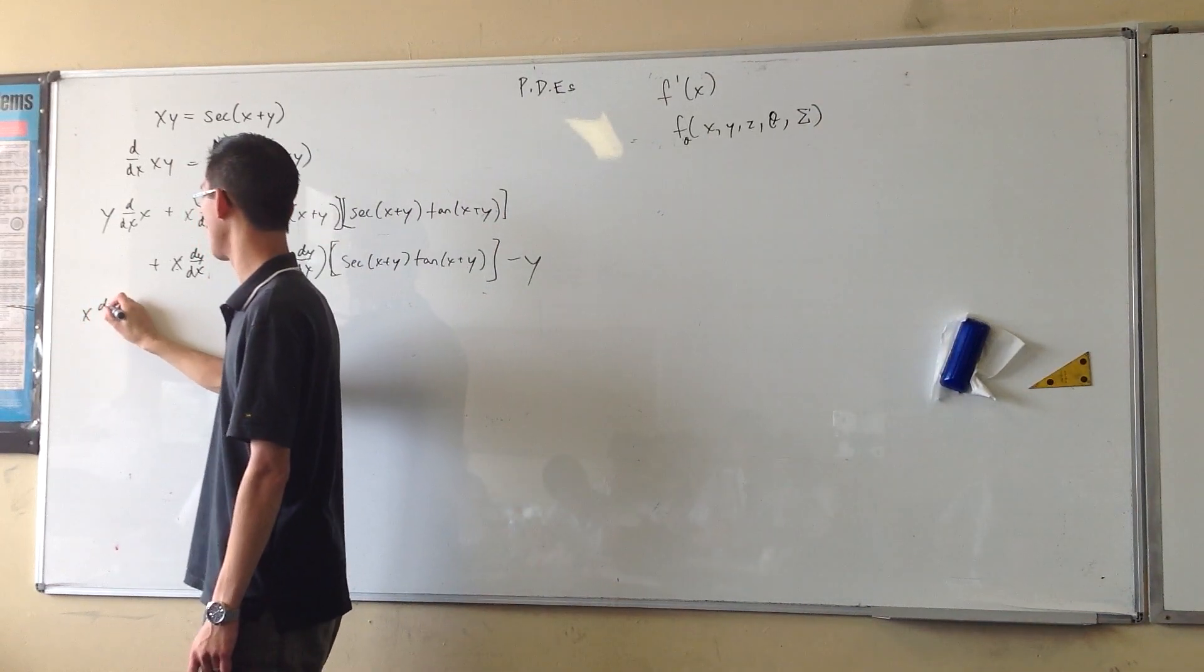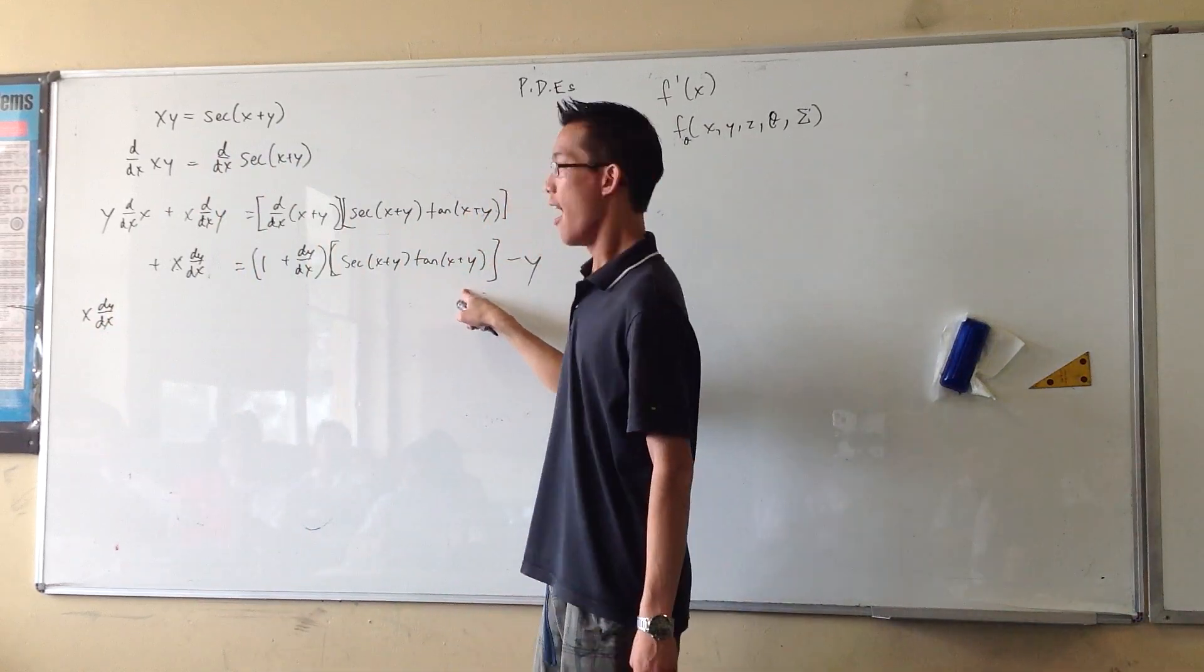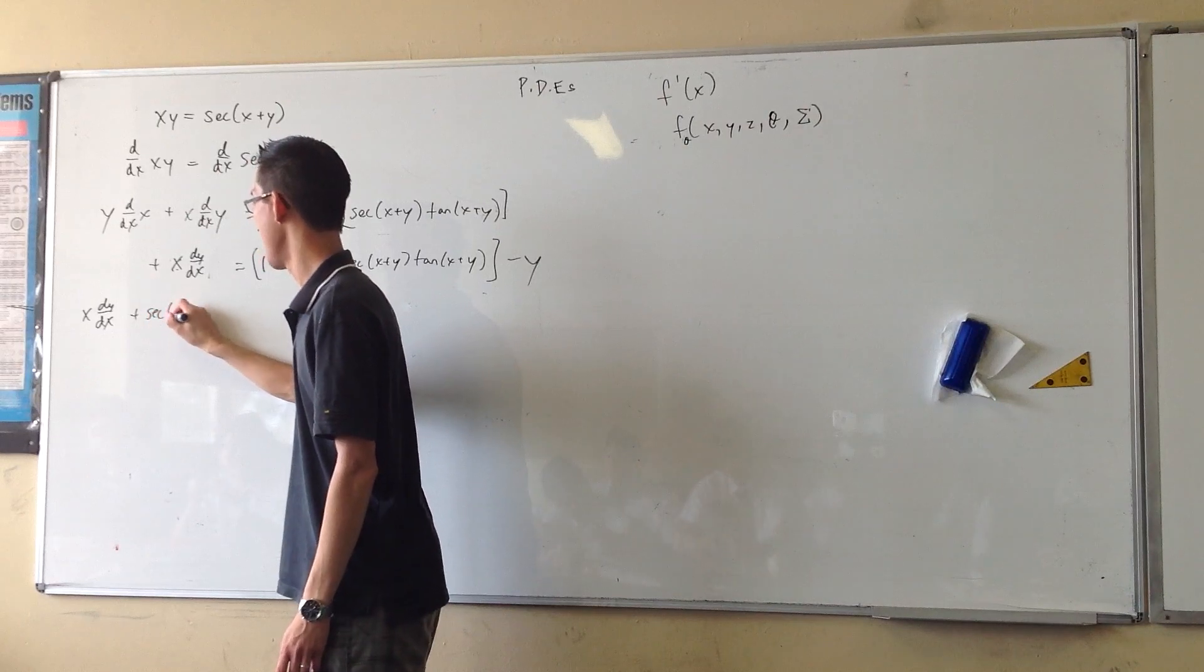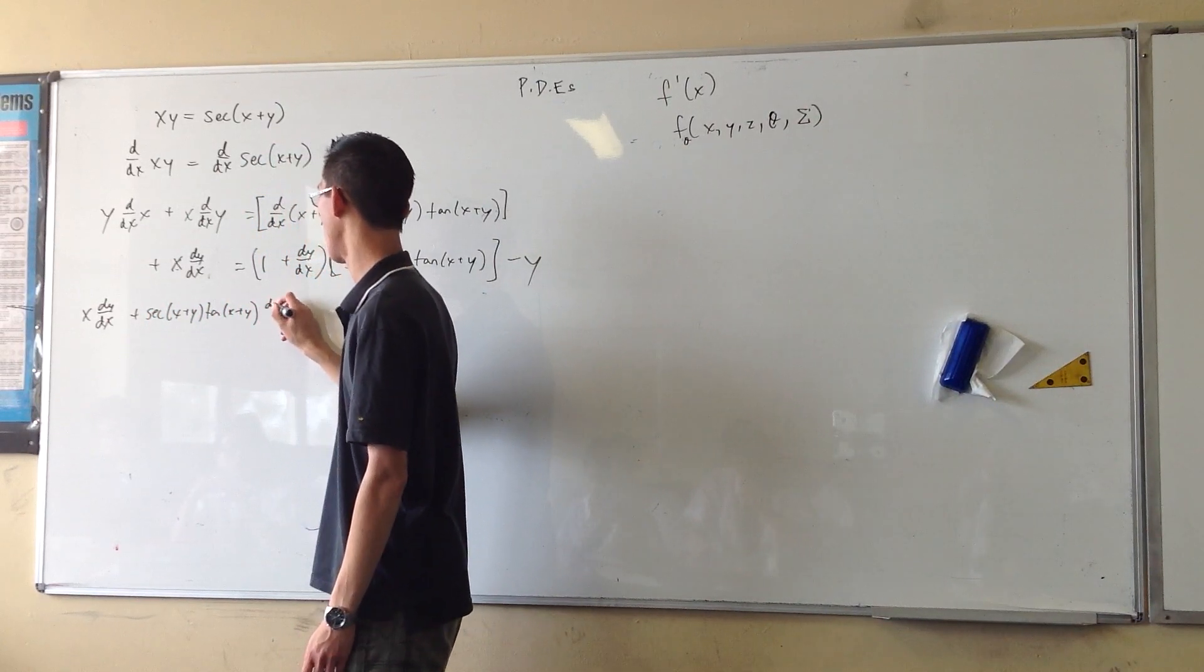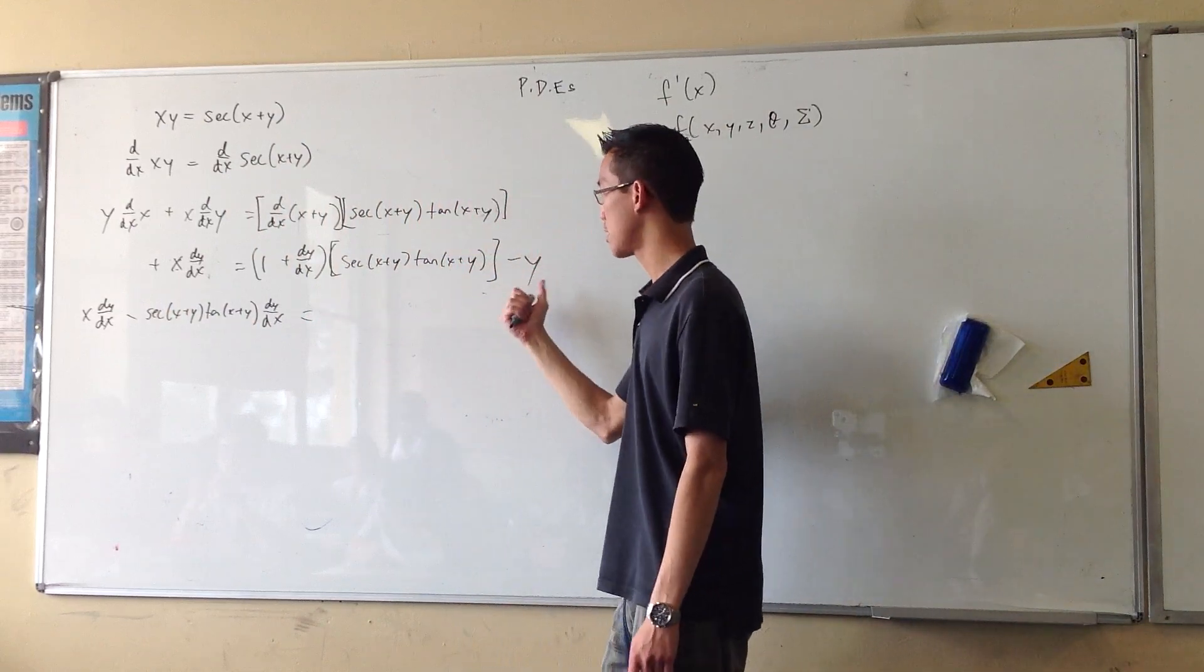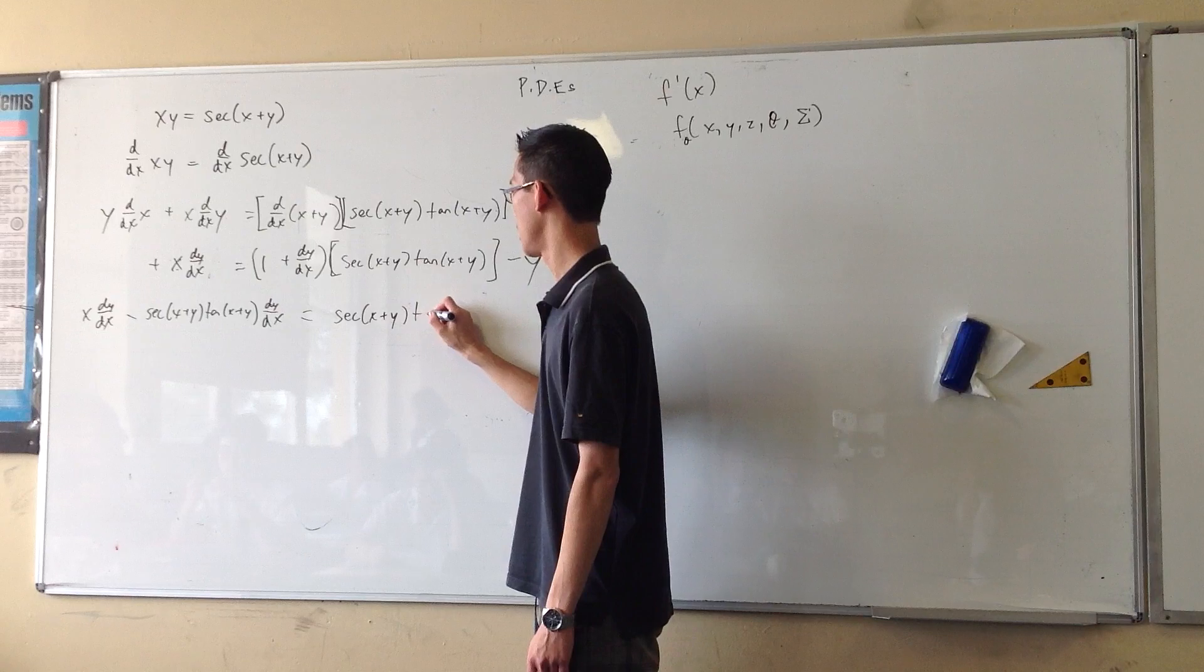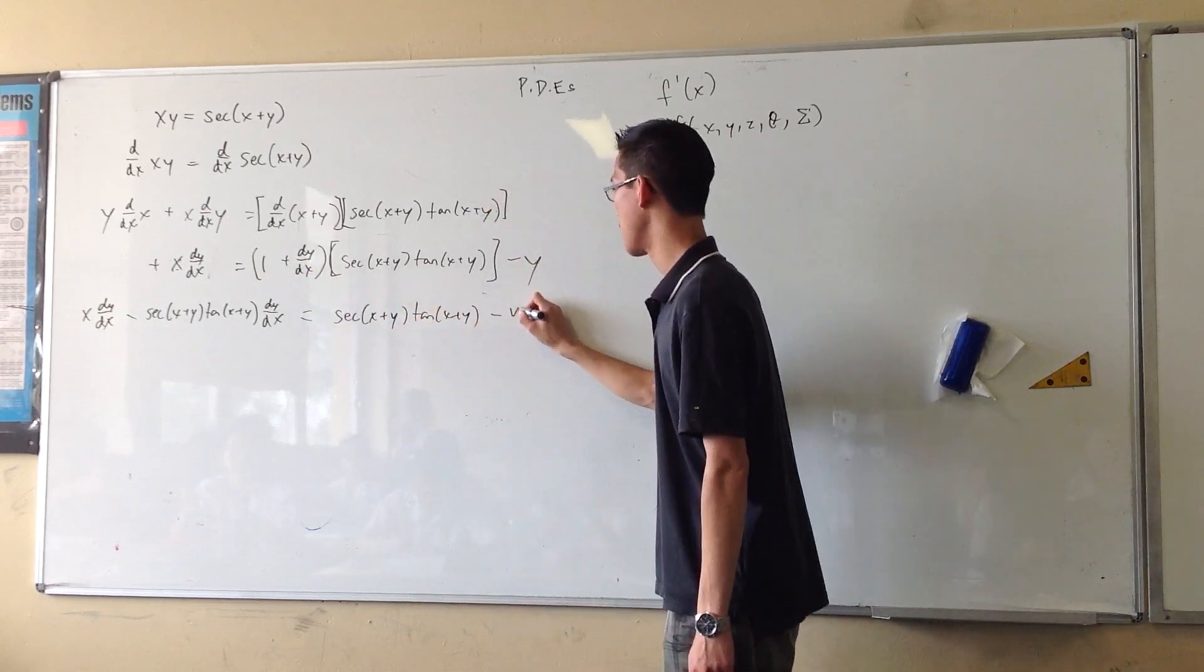I've got x lots of dy/dx, and then how many lots do I have here? I have, take a breath, sec(x+y) tan(x+y) lots of dy/dx. It's gross, but it is. Yeah, sorry, it's minus, thank you. Over on this side, I've got one lot of this left over. That's from this one, and then I've got minus y.